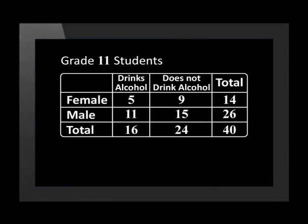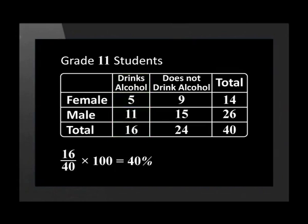Let's use this table to calculate the percentage of the students who drink alcohol. From the table, we can see that there are 5 females who drink and 11 males who drink. Altogether, 16 students out of the class drink. So 16 divided by 40, multiplied by 100, gives 40%. This means that 40% of the sample group admits to drinking, and 60% of the class does not drink alcohol.